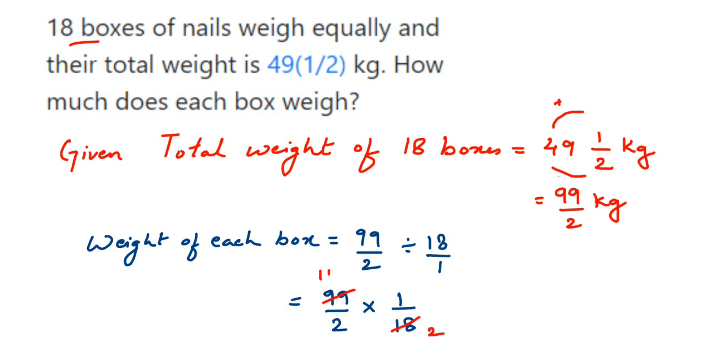Now I cannot cancel them further, so I'm going to multiply. In the numerator I have 11 and 1, so 11 times 1 is 11. I'll get 11 divided by - in the denominator I have 2 and 2, so 2 times 2 is 4. So 11/4 kg is the answer. Or if you convert this into a mixed fraction, this will be 2 and 3/4 kg. 2 and 3/4 kg will be the answer.